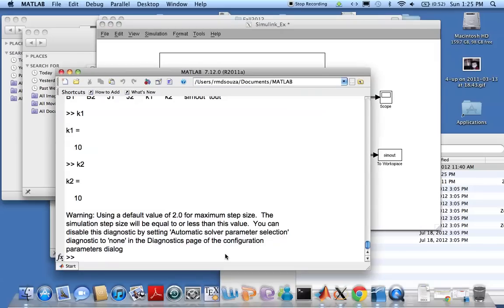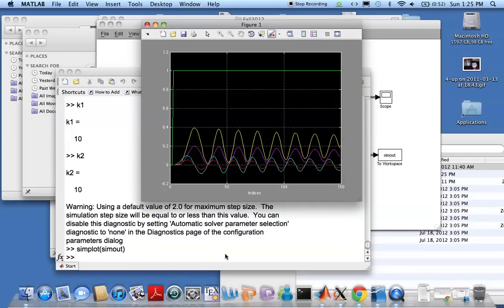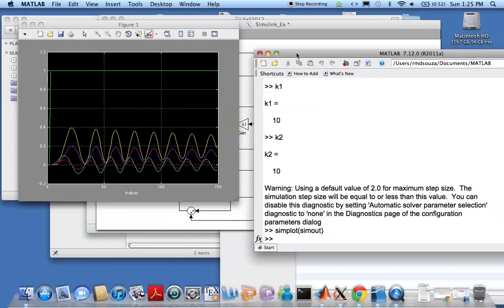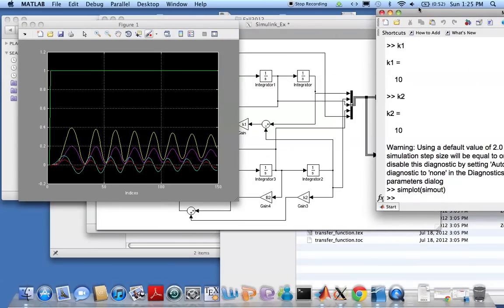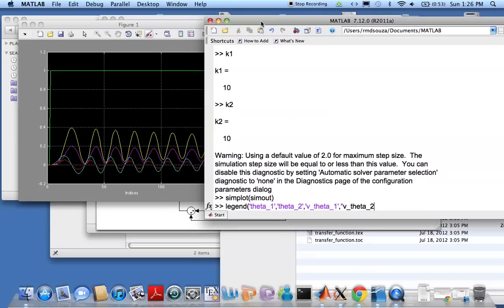Done, and then sim plot. Same out and there you have it. That's my output. I don't know what the variables are but let's just put a legend and see what happens here. Legend, obviously theta 1, theta 2, we theta 1, we theta 2, and finally tau.